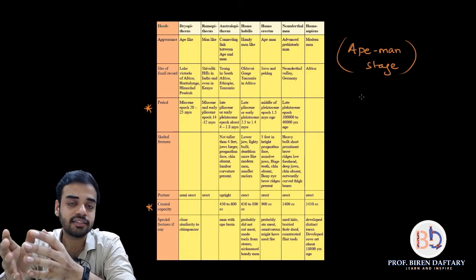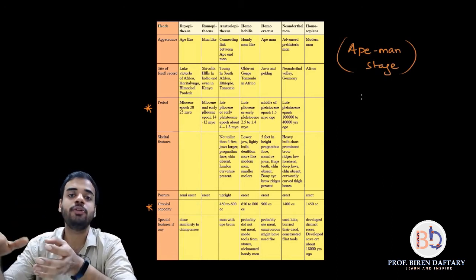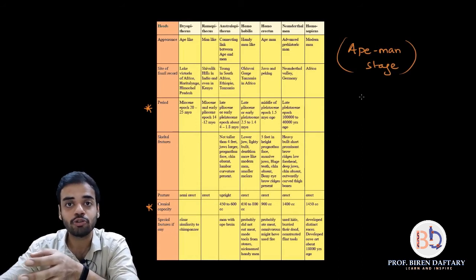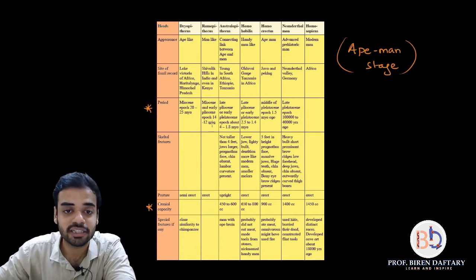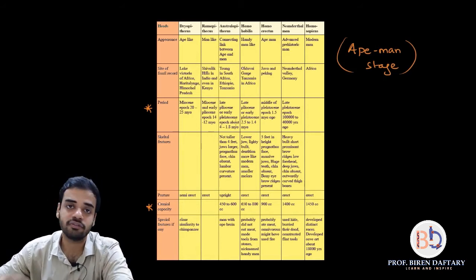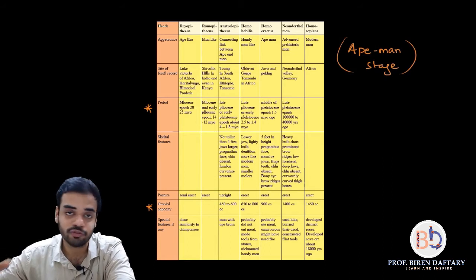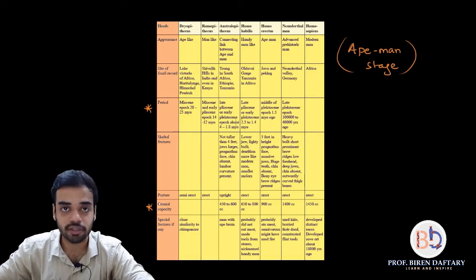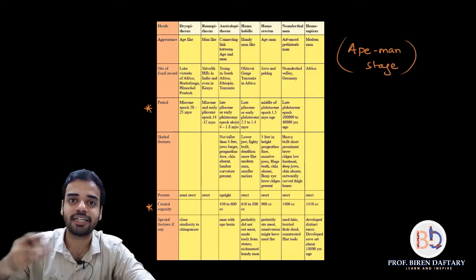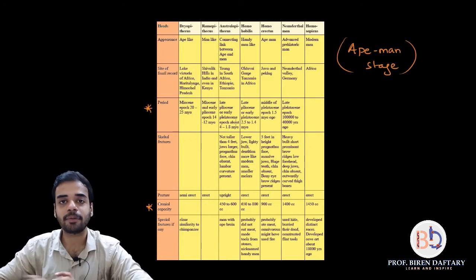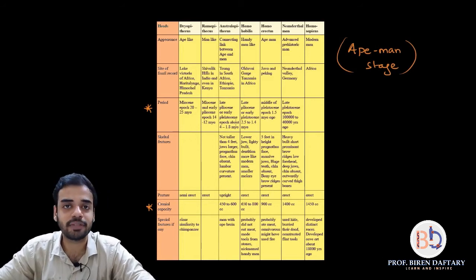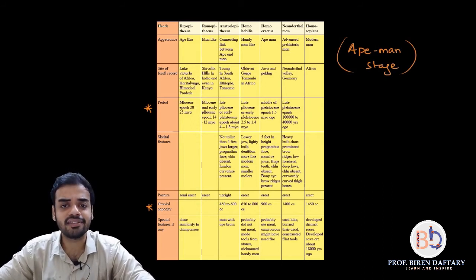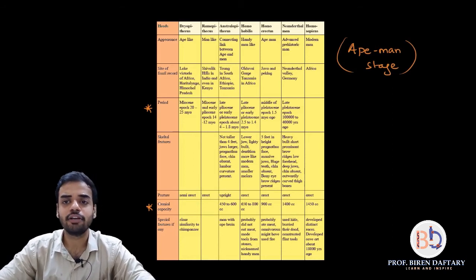The period for Ramapithecus spans Miocene and early Pliocene epochs. The posture has become more erect compared to Dryopithecus, though not completely erect. Cranial capacity is unknown due to insufficient fossil records. There are no major special features to remember for this stage.